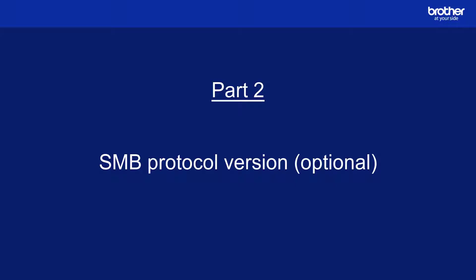If you want to change this default behavior so that your Brother device only communicates using its latest supported SMB version, you can. This setting can be found in the protocol section of your device's web server. If you would like to see how to do this, please click the link on your screen or in the description.